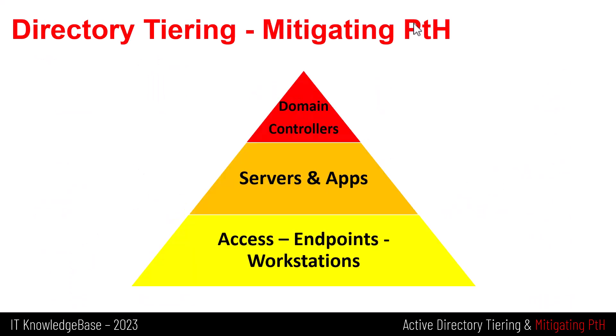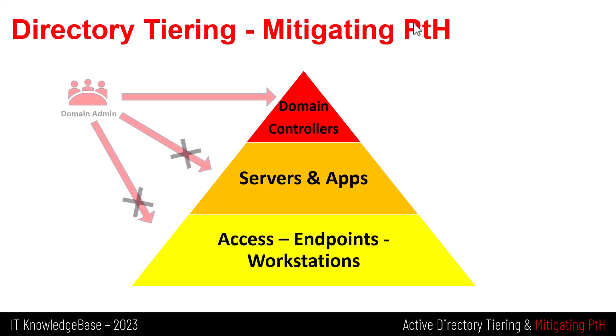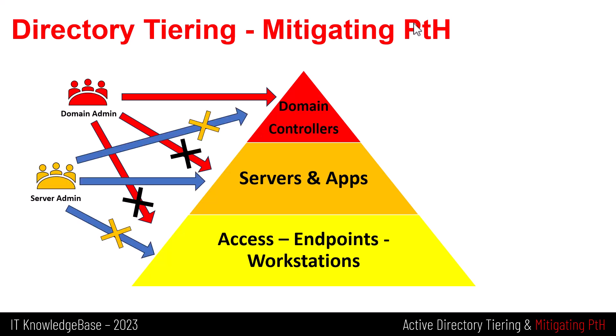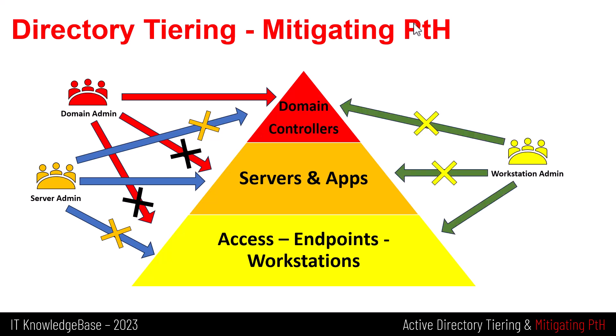The key to mitigating pass-the-hash attacks is to split your environment into three tiers — Azure has a minimum of two layers. Never allow a higher-tier admin to log into lower tiers. Create a policy to lock down domain admins from logging on to anything but domain controllers only. Create a group policy to lock server admins from logging on to anything but servers only. Then create a group policy to lock workstation admins from logging on to anything but workstations.